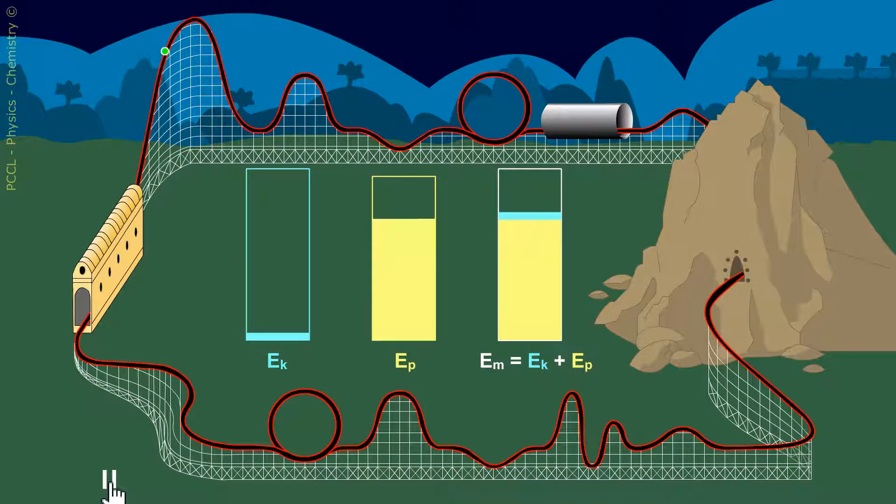We will study it more precisely. Here, the loss of potential energy is exactly offset by the gain in kinetic energy. So there, yes, we can compare. We have two forms of energy, two physical quantities of the same nature which are both measured in joules.